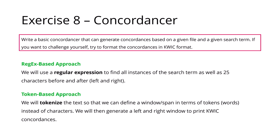Let's start with exercise 8: concordancer. The task is to write a basic concordancer that can generate concordances based on a given file and a given search term. If you want to challenge yourself, try to format the concordances in KWIC format — keywords in context. We're going to do two solutions: the first one is a regex-based approach where we find all instances of the search term with 25 characters to the left and right. The second is a token-based approach where we tokenize the text first.